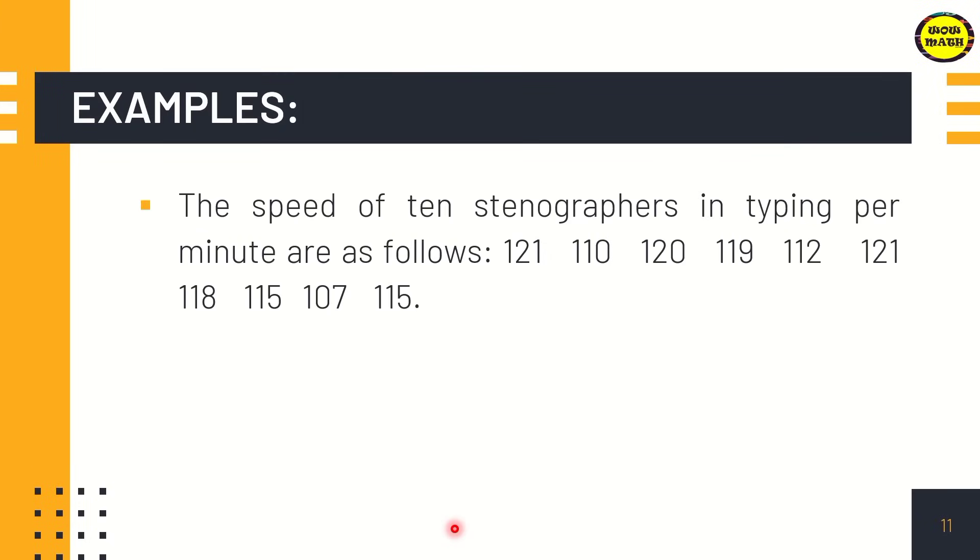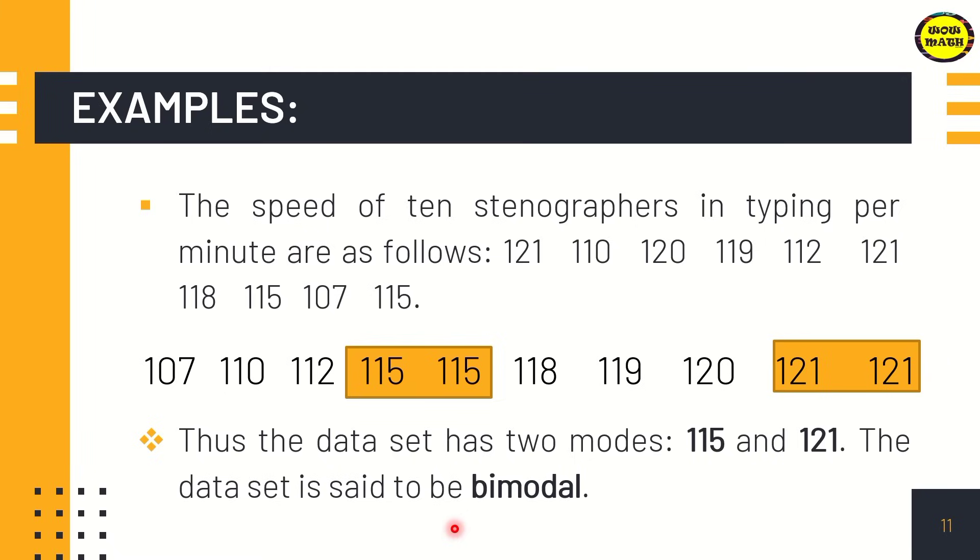Another example: the speed of 10 stenographers in typing per minute are as follows: 121, 110, 120, 119, 112, 121, 118, 115, 107, and 115. Find the mode of the data set. First, we need to arrange the data in ascending or descending order. Next, determine the number that appears the most number of times. In this given data set, we have 115 and 121, both appearing twice. Therefore, the data set has 2 modes: 115 and 121. The data set is said to be bimodal when we have two modes.